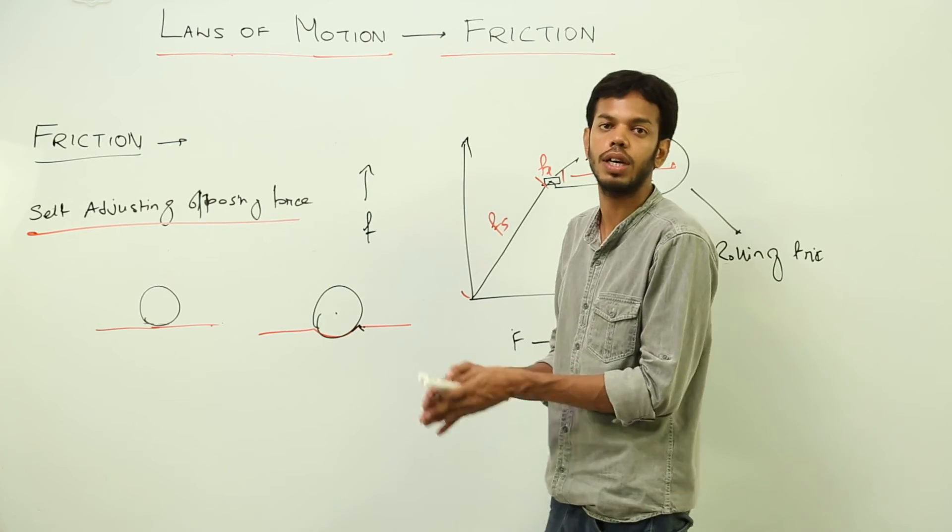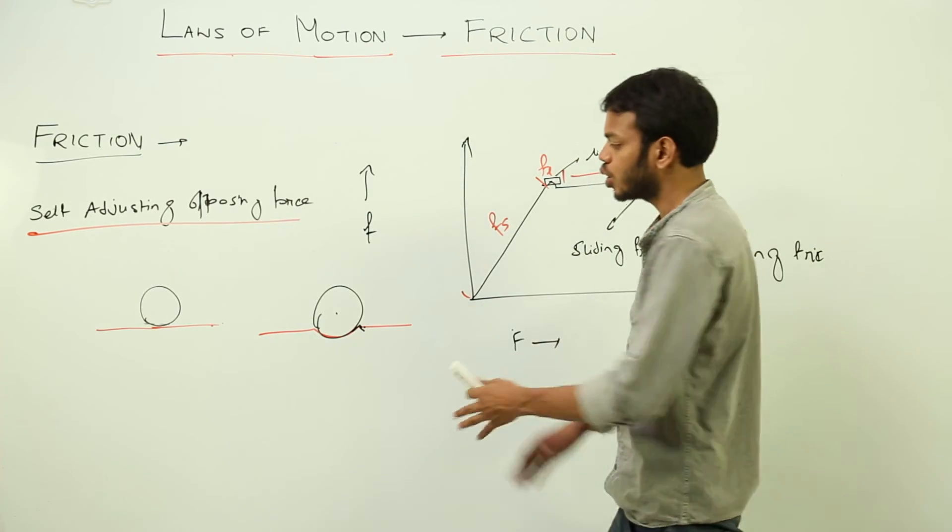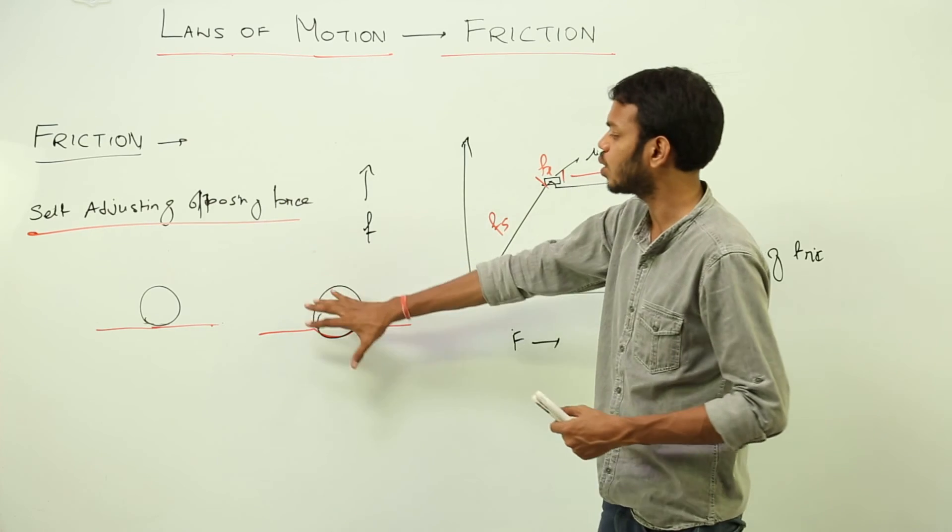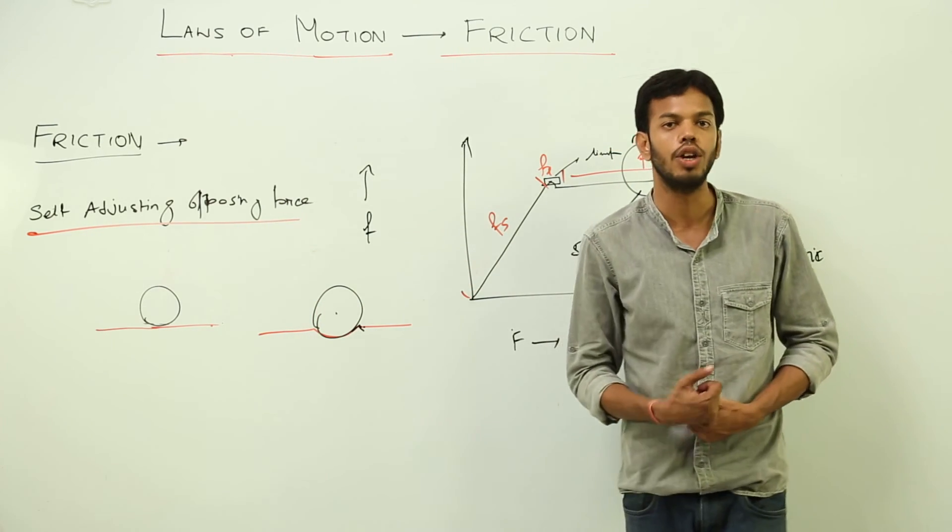This also accounts for the value of static friction. So both of these theories work in this point and this holds true for the value of rolling friction.